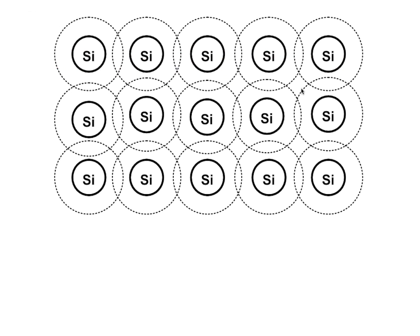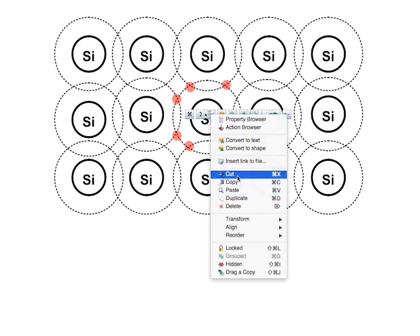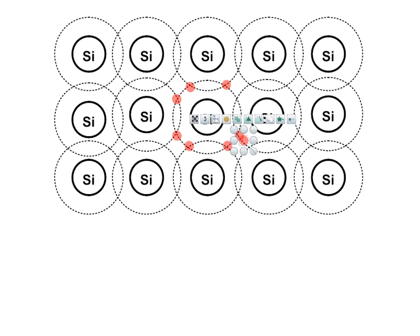Let's remind ourselves quickly of what silicon looks like. Silicon provides four electrons into its valency band, and we also have sharing going on as well. So we have an outer valency shell of four. If we move one of these electrons over into the conduction band, we automatically leave a positive hole behind. But the only way we can do that is by increasing the temperature.